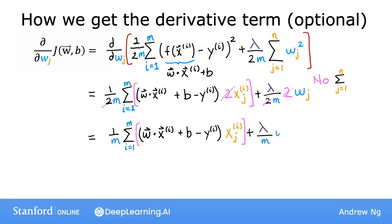And finally, remember that w dot x plus b is f of x, and so you can rewrite it as this expression down here. So this is why this expression is used to compute the gradient in regularized linear regression.